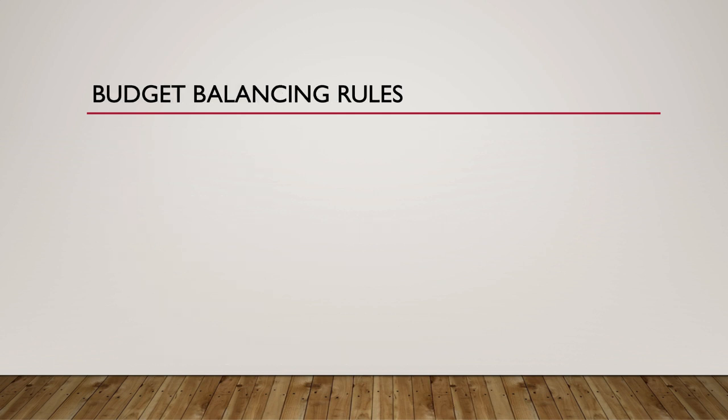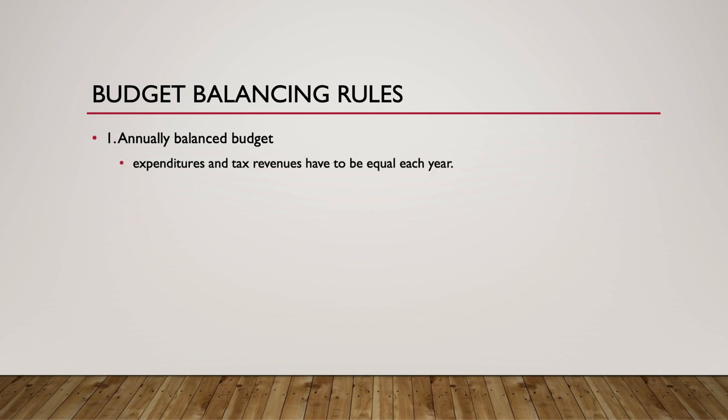When does a government, either at the federal level or at the state level, have to balance its budget? There are three rules or approaches to budget balances. Number one is an annually balanced budget, under which expenditures and tax revenues have to be equal each year. While an annually balanced budget seems ideal at first glance, it leaves governments with a severe inability to implement expansionary fiscal policy during recessions, and many economists believe that these rules in the early 1930s made the Great Depression worse.